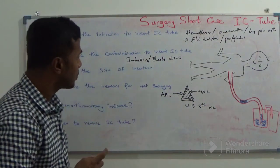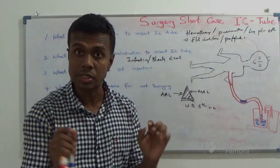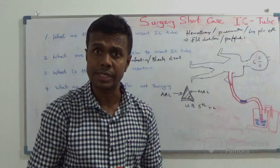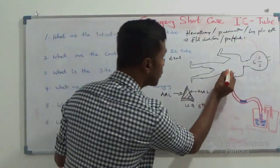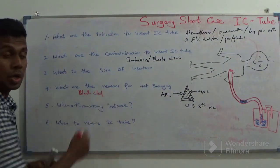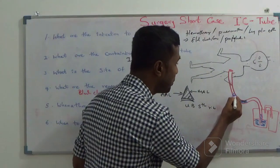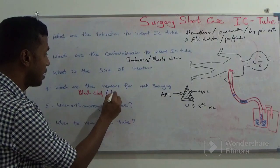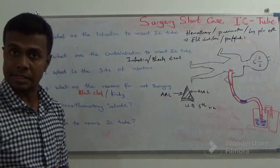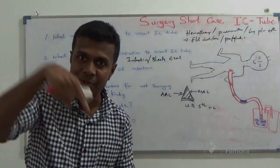What are the reasons for not swinging? If the IC tube is functioning, the fluid column must be swinging. Reasons for non-swinging may be due to a blood clot causing obstruction, or tube kinking. Those are the main reasons — blood clot and kinking.